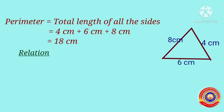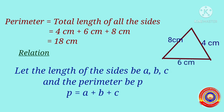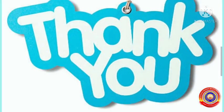Now we can write the relation as: let the length of the sides be A, B, C and the perimeter be P. Then P is equal to A plus B plus C. That's all for today children. We shall continue our class on the next day. Thank you.